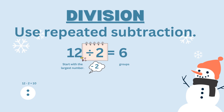You can also think of it as repeated subtraction. The middle of the division sign looks like a subtraction sign, so it's easy to remember. Start off with one circle and put two dots in the circle. 12, which is the largest number, minus two equals 10. We have to keep subtracting two until we get to zero.